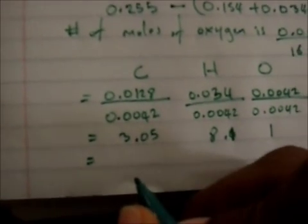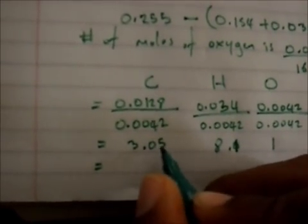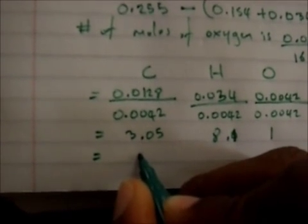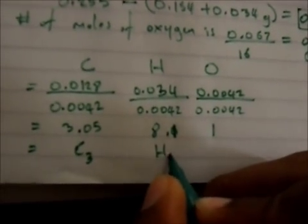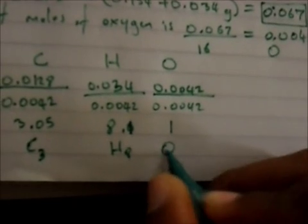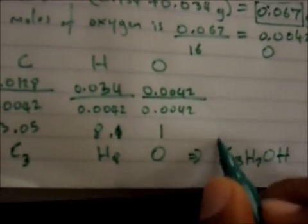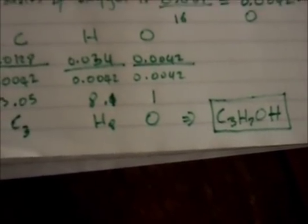We round these values: 3.05 rounds down to 3 carbons, 8.1 rounds to 8 hydrogens, and oxygen is 1. Since it's an alcohol, the empirical formula is written as C₃H₇OH, which gives the answer. That is the empirical formula for isopropyl alcohol, also known simply as propanol. And that's the question for today, thank you.